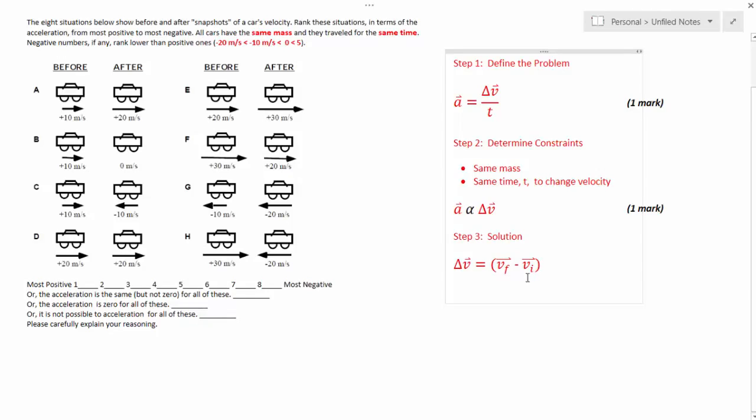So provided v-final is greater than v-initial, we'll get a positive change in velocity. If v-final is less than v-initial, we'll get a negative. And if v-final equals v-initial, we'll get zero.